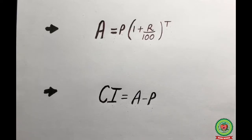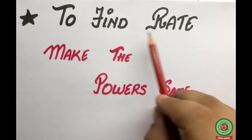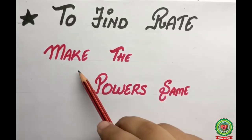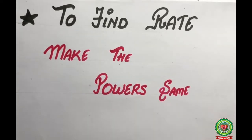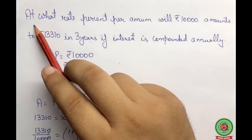To find rate, you need to remember one thing: we have to make the powers the same on each side. In every sum where we are required to find the rate, we are going to make the powers on both sides equal.